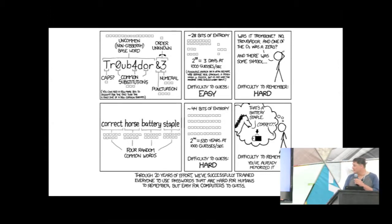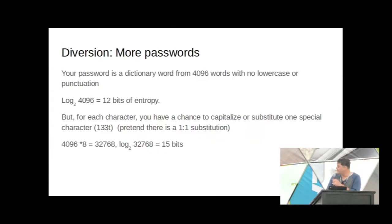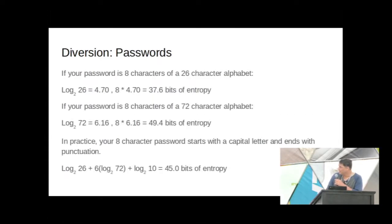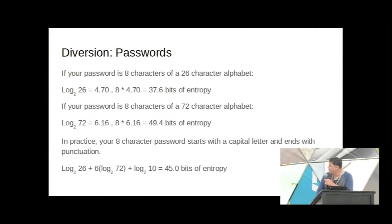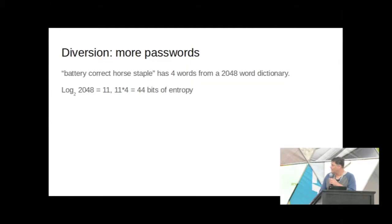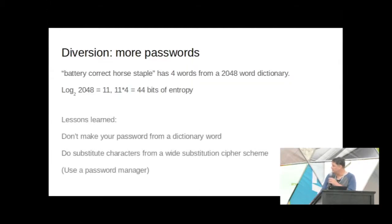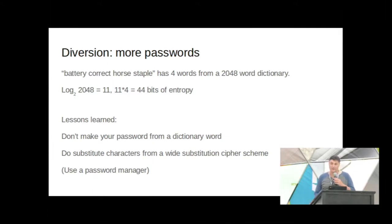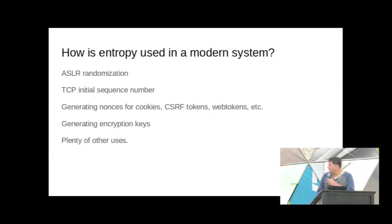What I wanted to get across is the measurement of entropy. Some people say you should have 75 bits of entropy in your password. With eight characters we can only get 50 bits, so we'd have to go out to about 12 characters to hit 75. My recommendation: just use a password manager. It'll generate a password for you with nice, good random algorithms.